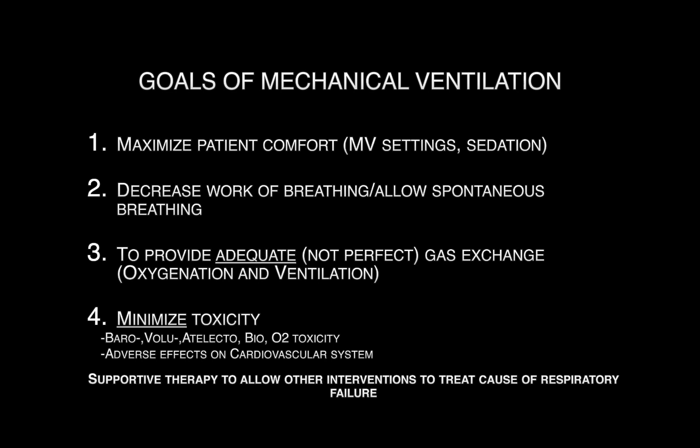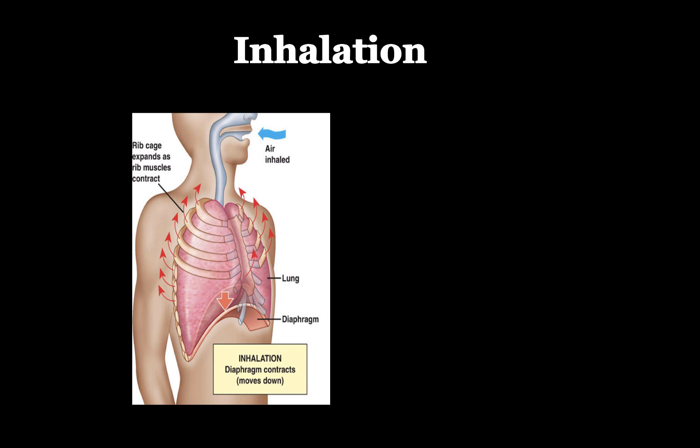The next section covers a basic review of respiratory physiology. Recall that at functional residual capacity, or FRC — the volume of gas present in the lungs at end expiration and prior to inhalation, in a state of no gas movement — the natural tendency is for the lungs to want to collapse due to elastic recoil, while the chest wall tends to expand outward. At FRC, these forces cancel out and there is no net movement of air.